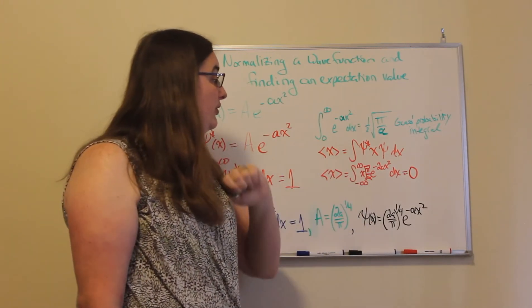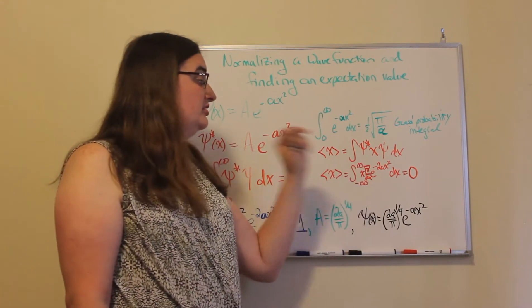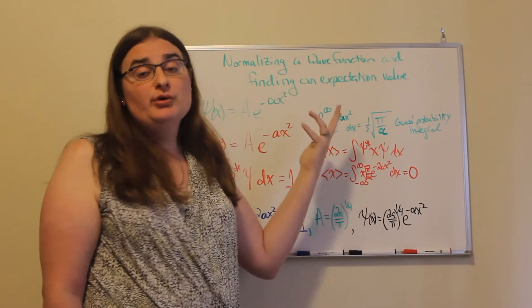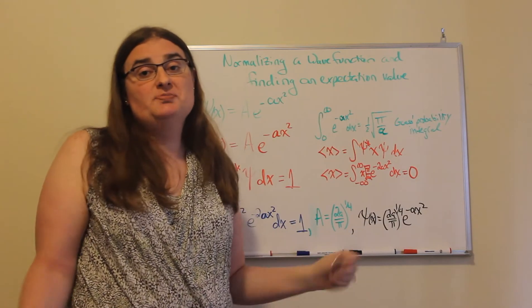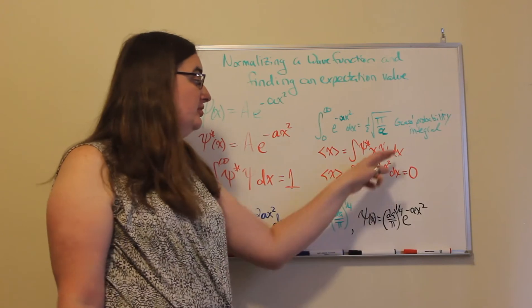And we would write it out as the complex conjugate of our wave function times what we're averaging. So if we want to find the average location, it would just be x times our original wave function dx.